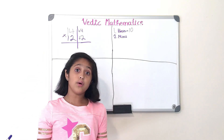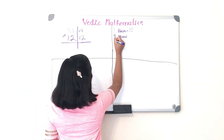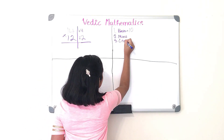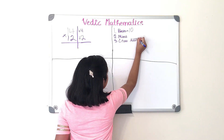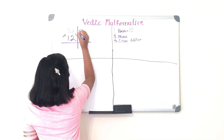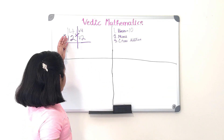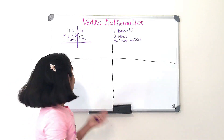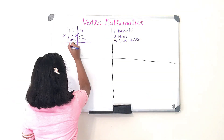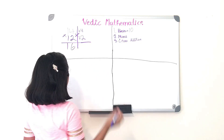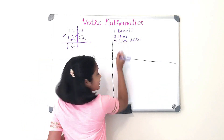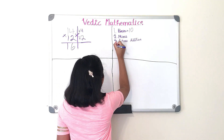Step three is cross addition. We add these numbers: 14 plus 2, or you can do 12 plus 4 — they both equal the same thing. So 14 plus 2 equals 16, and 12 plus 4 also equals 16.